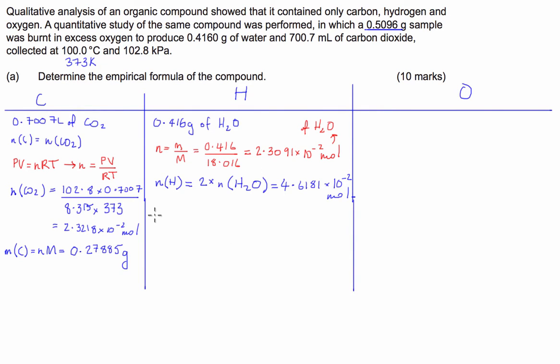Then we have to work out the mass of the hydrogen. That's just equal to the number of moles of hydrogen times the molar mass, so it's going to be 4.6181 times 1.008 and we get 4.655 times 10 to the negative 2 grams.